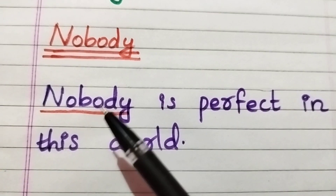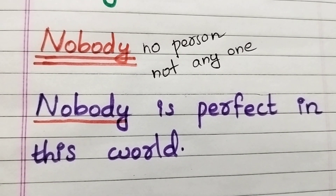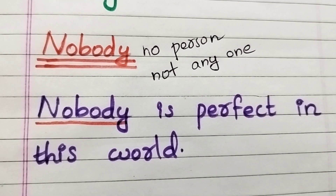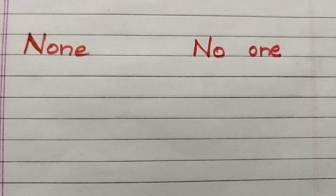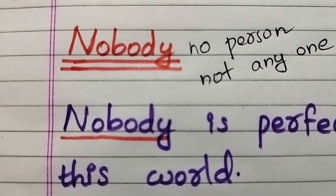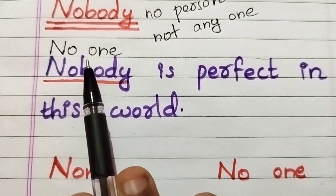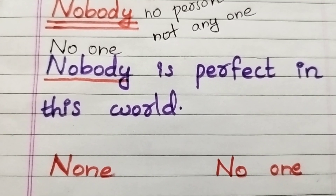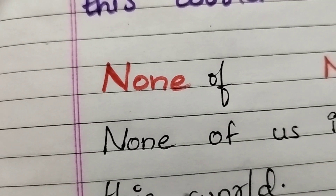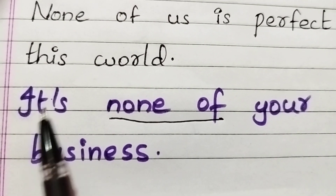'Nobody' is a negative word and the sentence is: 'Nobody is perfect in this world.' Nobody means no person or not anyone. The synonyms of 'nobody' are 'none' and 'no one' — these three words have somewhat the same meaning. You can also write: 'No one is perfect in this world,' or 'None of us is perfect in this world.' When using 'none,' you need to add 'of' with it. Another example: 'It's none of your business.'